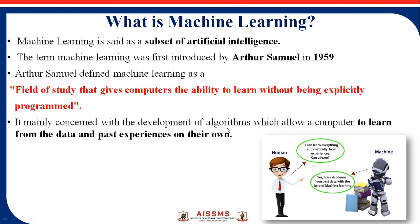Machine learning is mainly concerned with the development of algorithms that allow computers to learn from data and past experience on their own. Just as humans can learn from their past experience, machines can also learn from their past data. As shown in this diagram, there is a human and a machine. A human can learn everything automatically from experience, and similarly, a machine can also learn from past data with the help of machine learning.